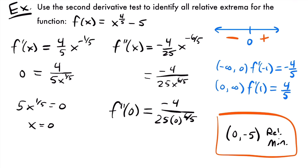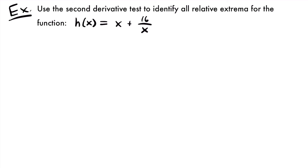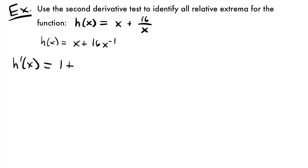Let's look at one final example. We want to use the second derivative test to determine the relative extrema for h(x) = x + 16/x. We'll rewrite this as h(x) = x + 16x^(-1) to make the power rule easier to apply. The first derivative is h'(x) = 1 + 16(-1)x^(-2) = 1 - 16/x². Setting this equal to zero: 16/x² = 1, so x² = 16, giving x = ±4. Our two critical values are x = -4 and x = 4.